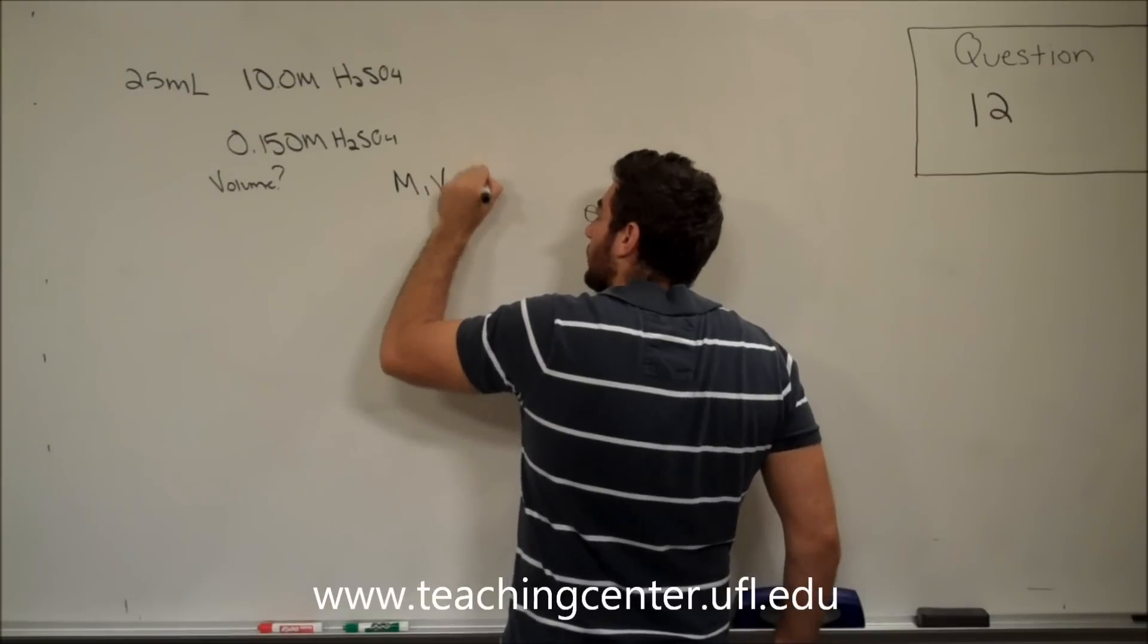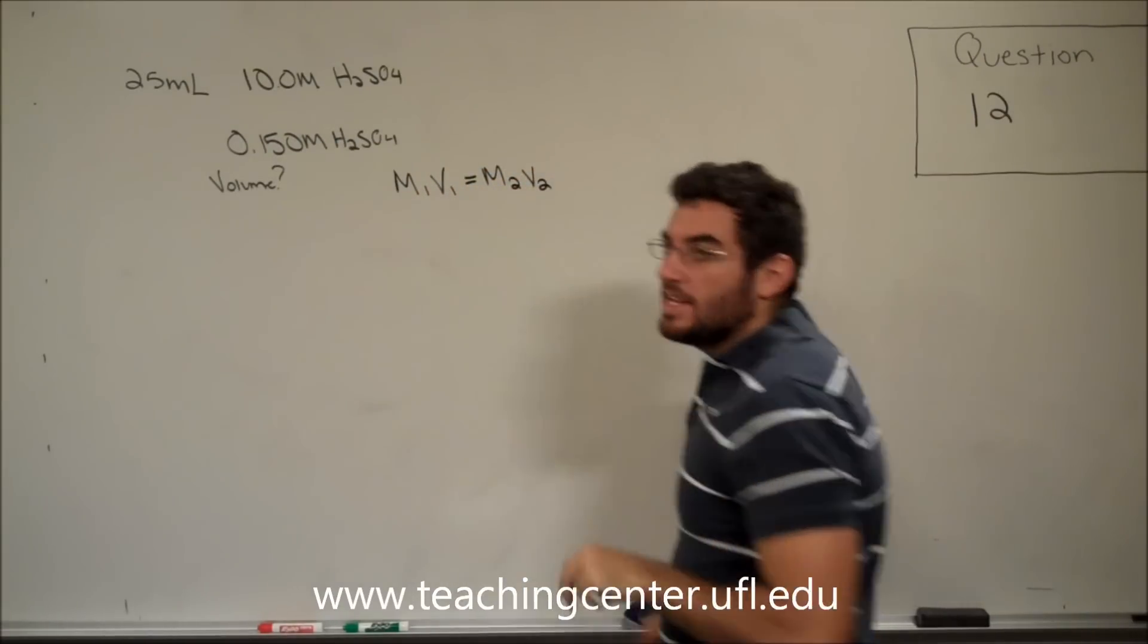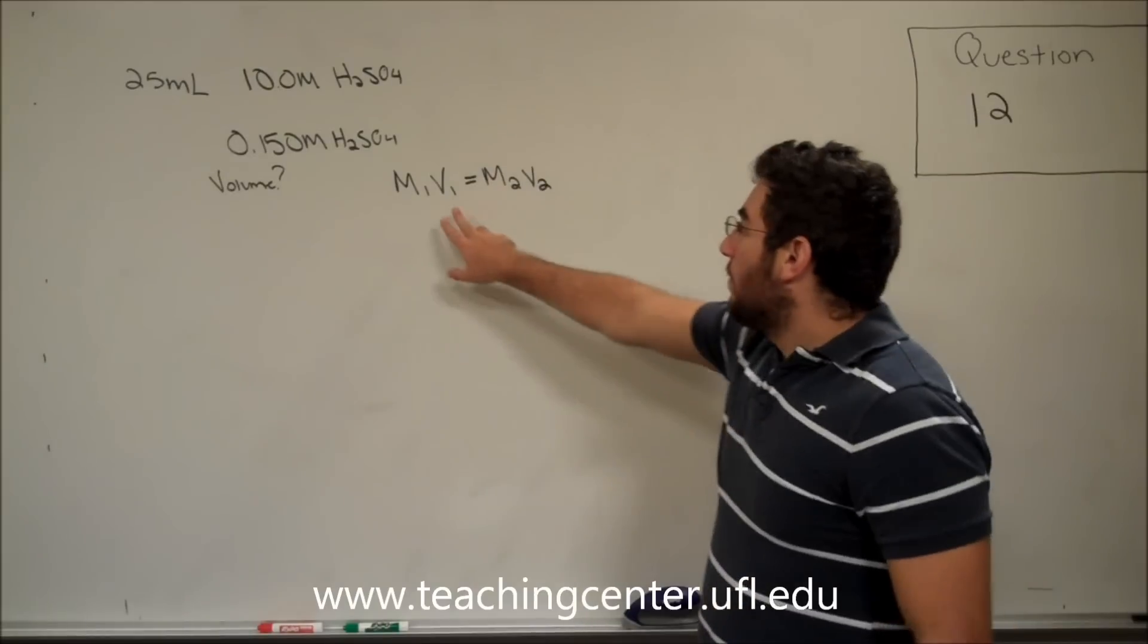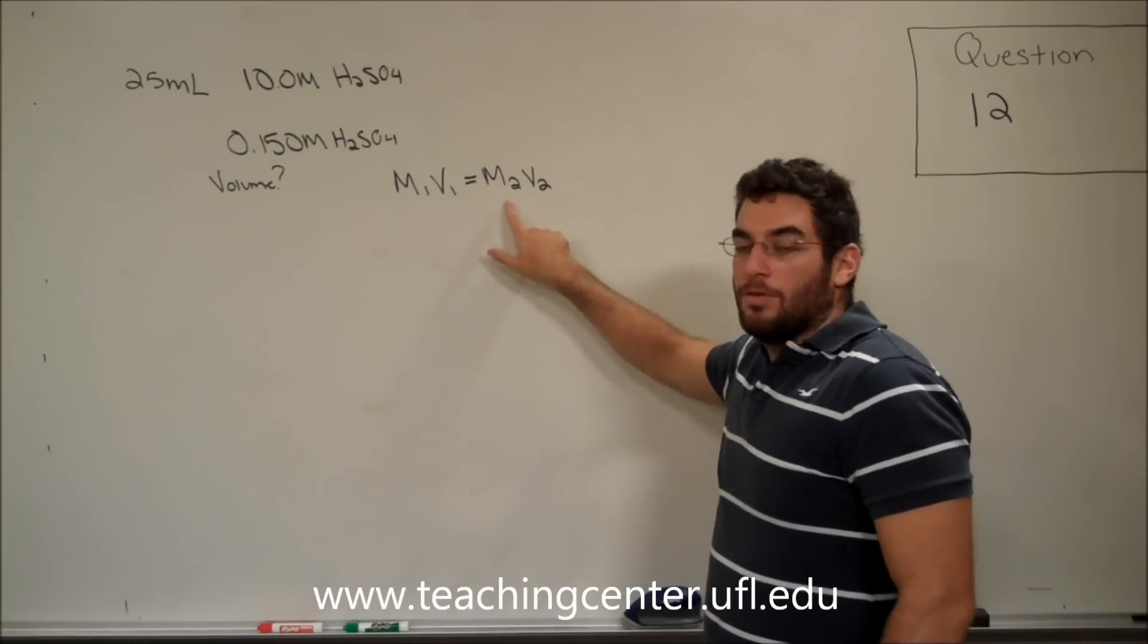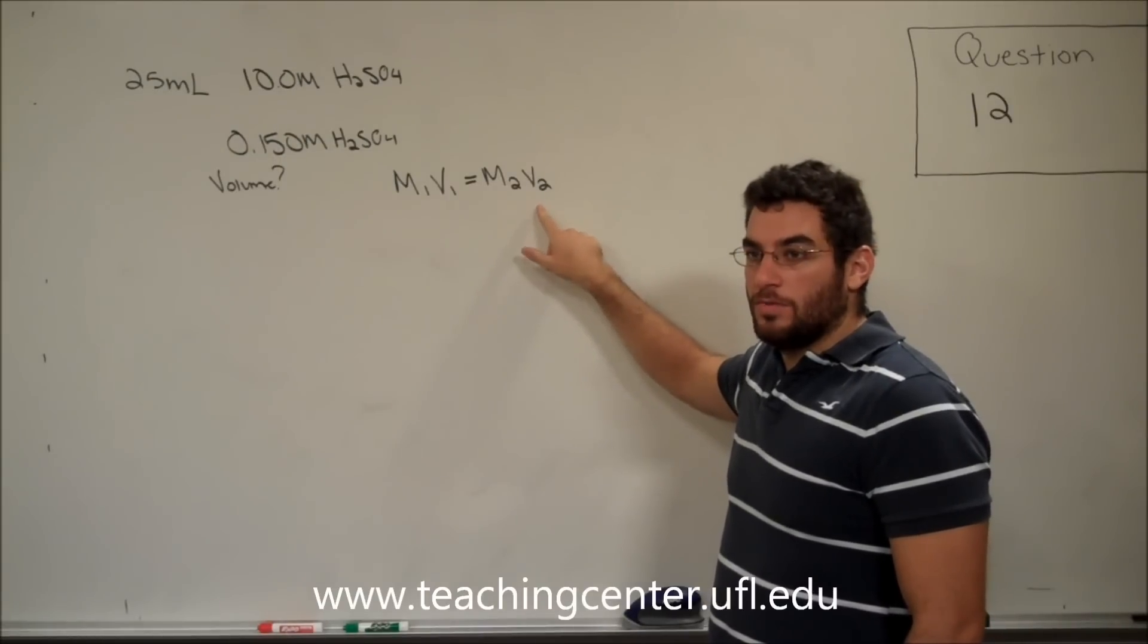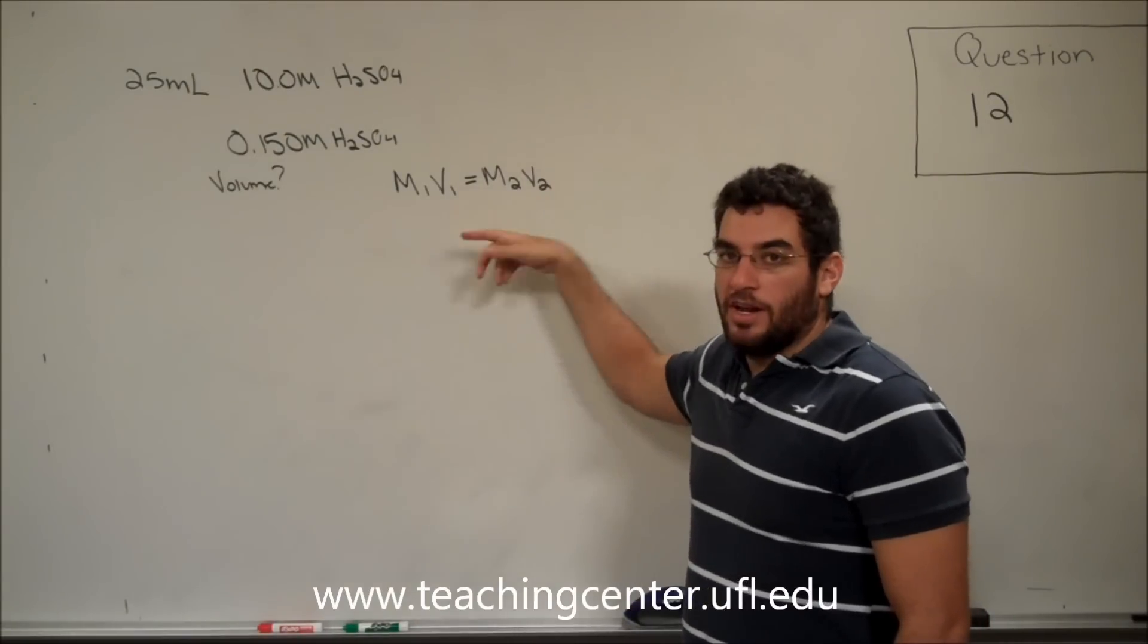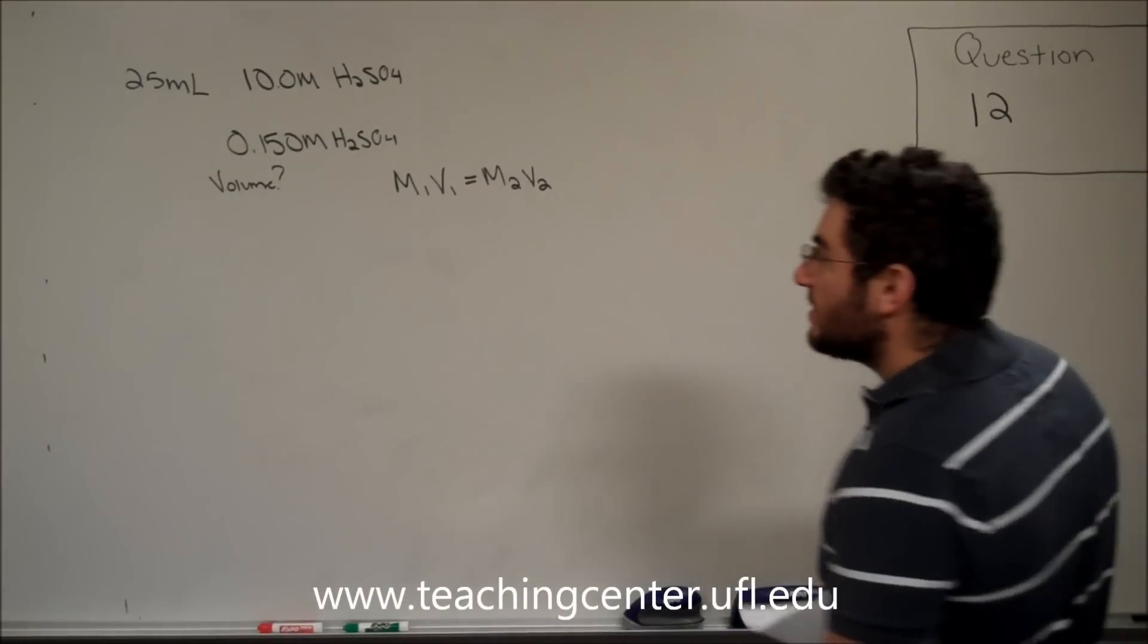M1V1 is equal to M2V2. And what this says is, if we have a solution with a known molarity, and we multiply it by the volume, then we can calculate either the molarity of the solution, given a volume that we want, or we can calculate the volume given how concentrated or the molarity of the solution.